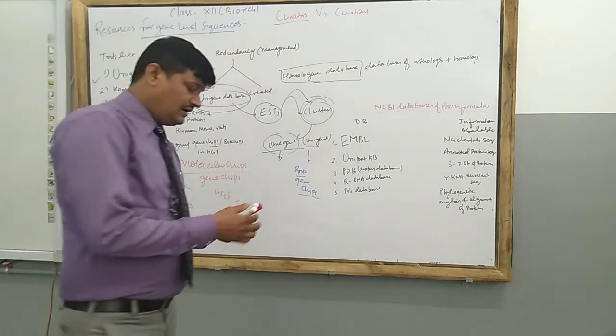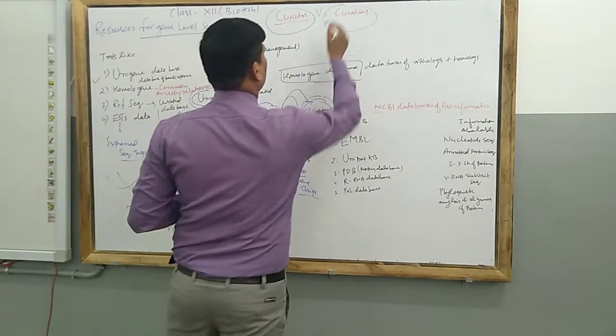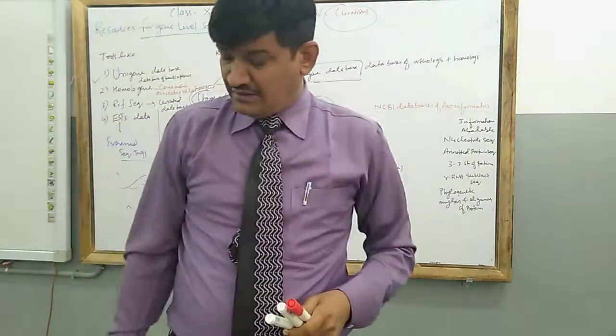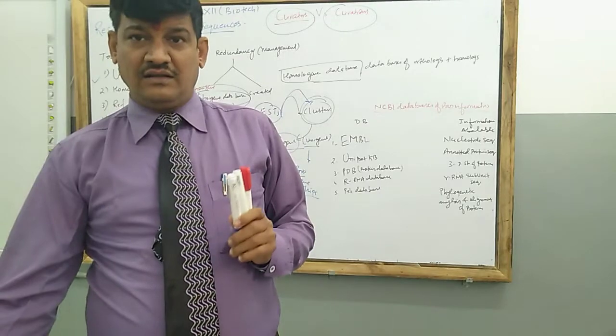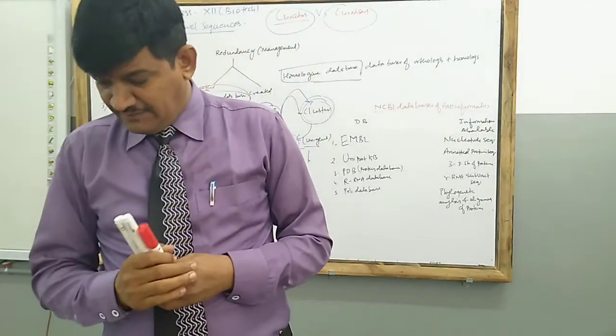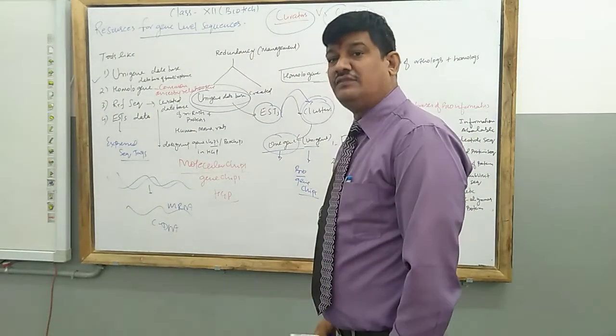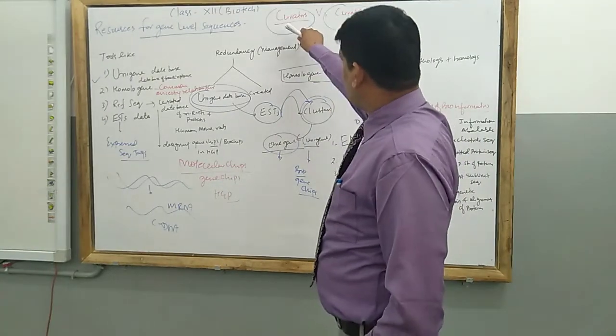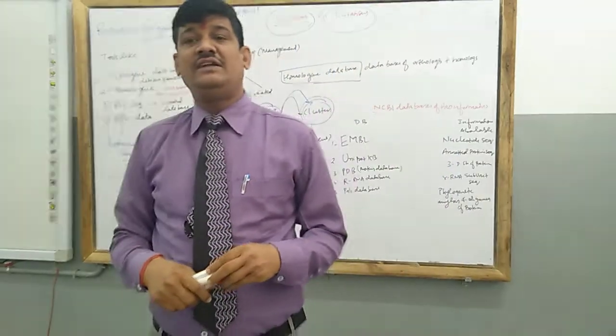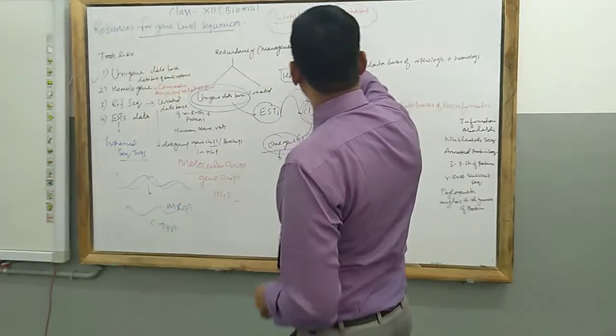While we are going through gene level sequences, we find two technical terms. Number one is curators and number two is curation. What is the meaning of curators? Curators are the experts and they are responsible for checking out the entry or managing the data related with gene level sequencing. Curators are the experts or persons who are handling the data analysis and managing the data, its checking and its proper fitting in the computer.